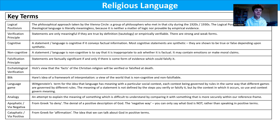A blick, then, is Hare's idea of a framework of interpretation — a view of the world that develops from birth, grows as we age, and is fixed in our minds like a lens through which we see the world. Someone might have a Christian blick. He uses the example of the lunatic's blick at university. He is saying that blicks are non-cognitive and non-falsifiable, and this is his way of explaining how religious claims can have meaning for those who are religious.